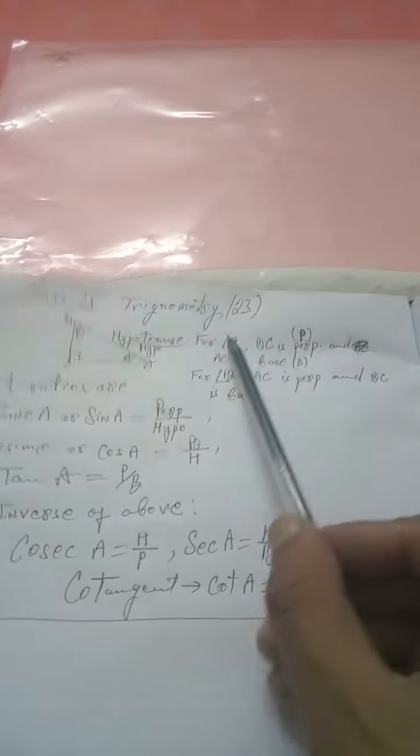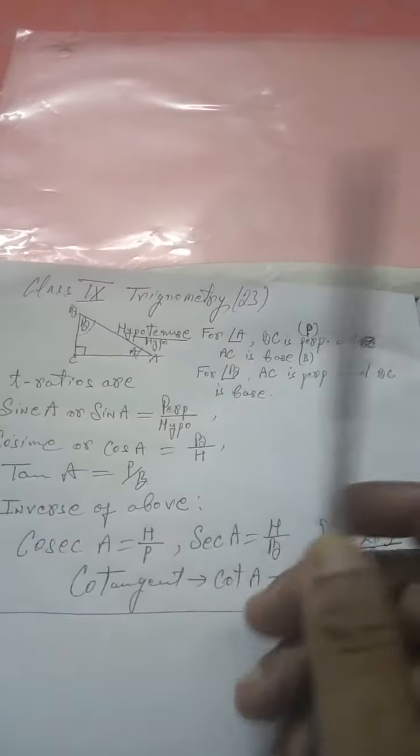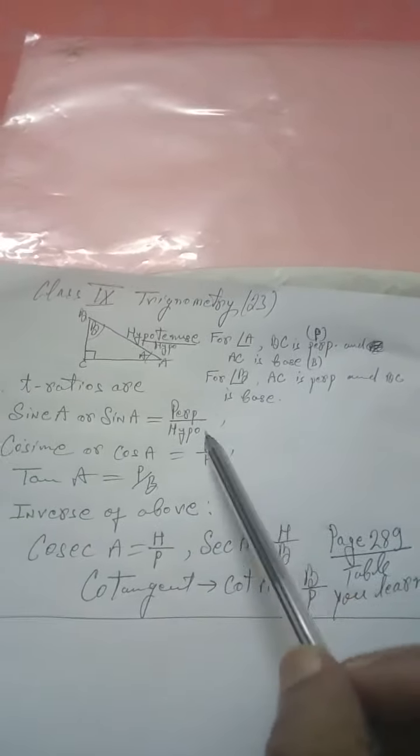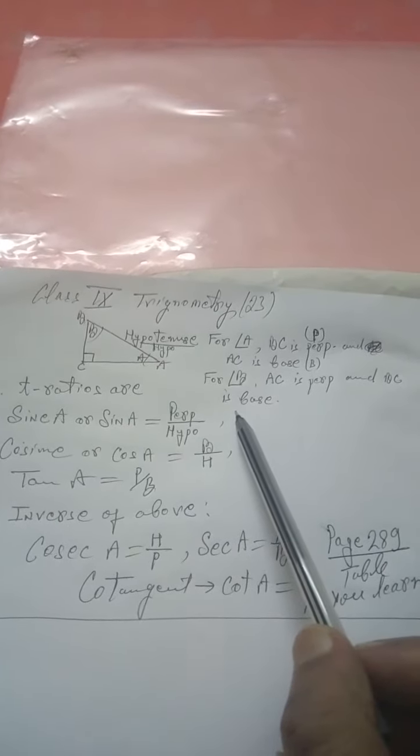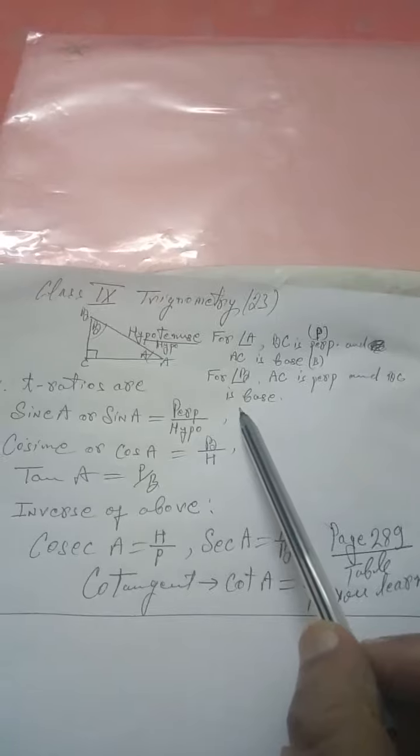For angle A, BC opposite side is perpendicular and AC is base. Hypotenuse is AB. For angle B, AC is perpendicular, that is opposite side, and BC is base.